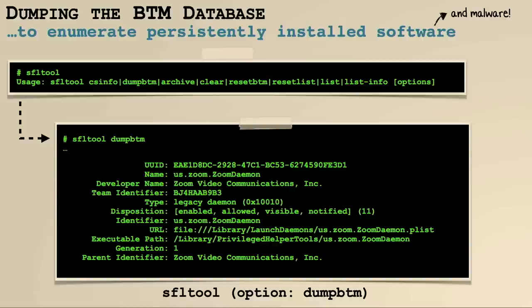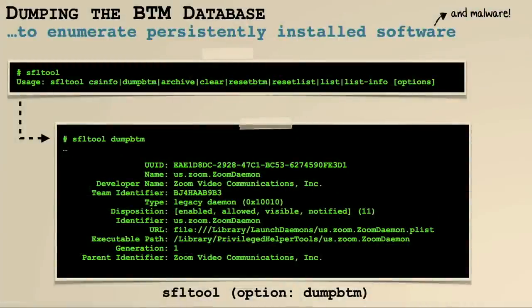The first idea to leverage BTM is to dump the database, because the BTM database has a comprehensive list of all persistent items. The idea is to write a tool that runs on a Mac system and shows everything that's persisted — including legitimate software like Zoom, but also any persistent malware. The problem is this database is proprietary and undocumented. Luckily, Apple ships a tool called the SFL tool that allows you to interact with this database. One of its commands is 'dump BTM,' and if you execute it, it nicely dumps the database — we can see the information about Zoom's persistent component in the BTM database.